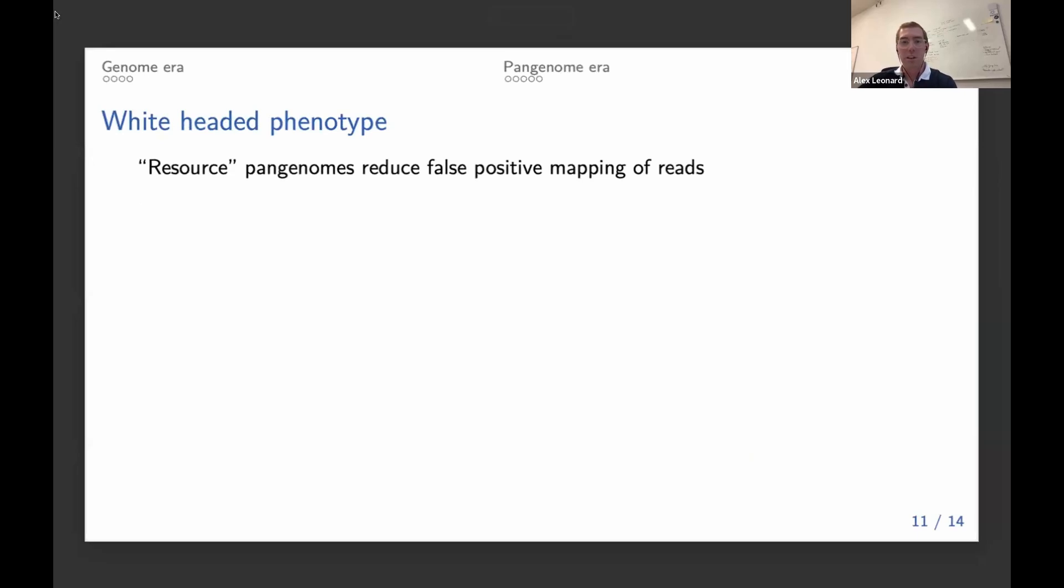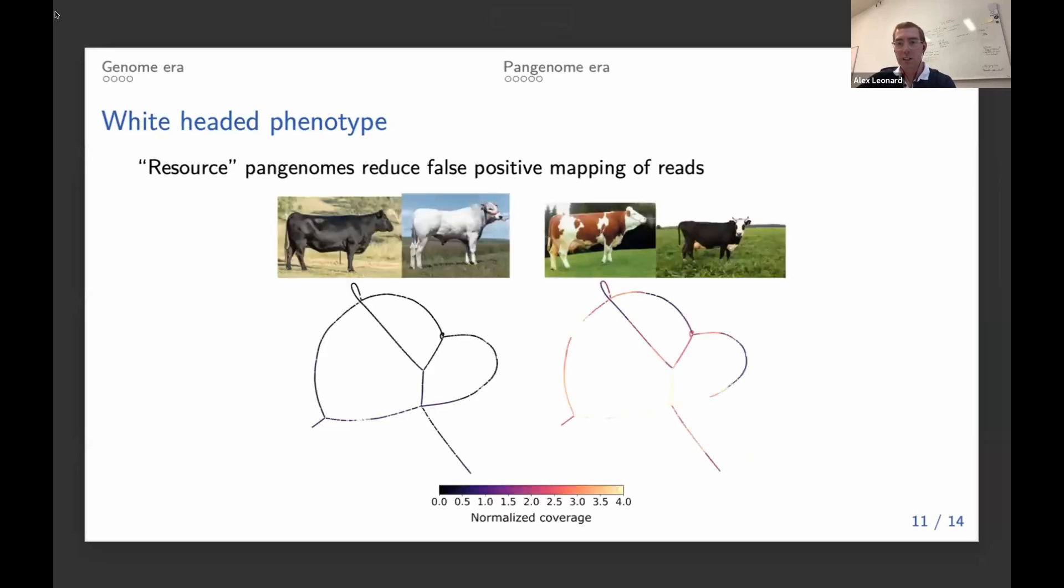And some quick examples. One of them is this interesting white-headed phenotype that we've seen in some cows. So the two cows on the right both have colored bodies, but white heads.